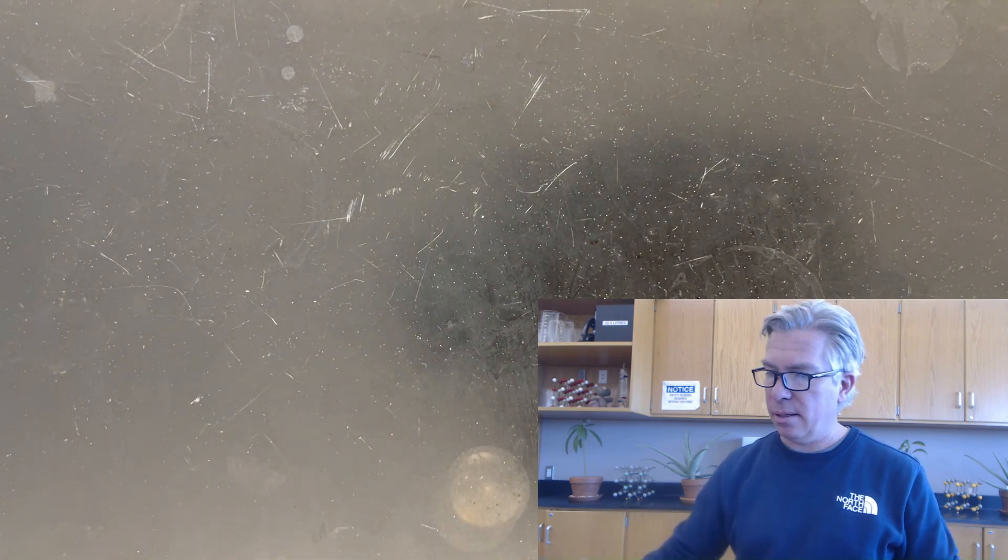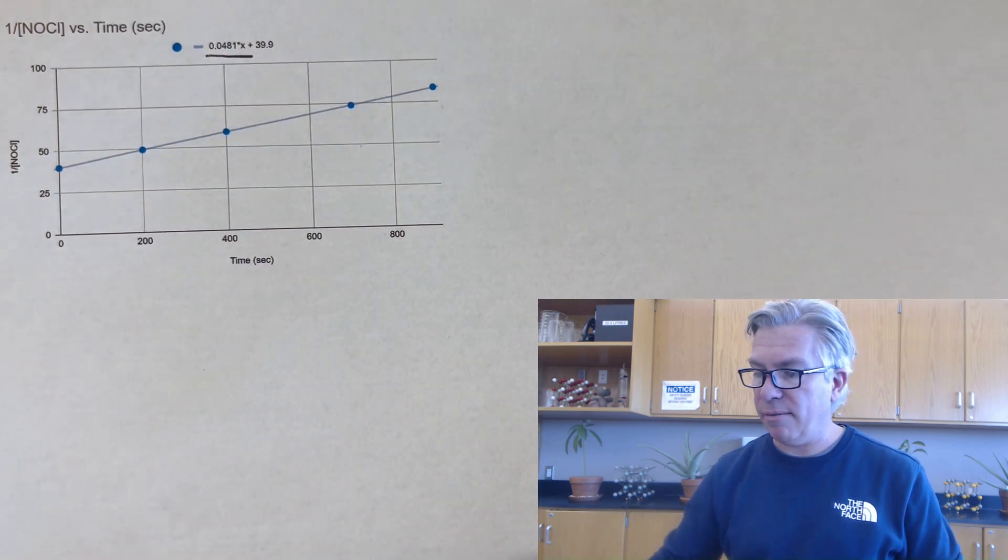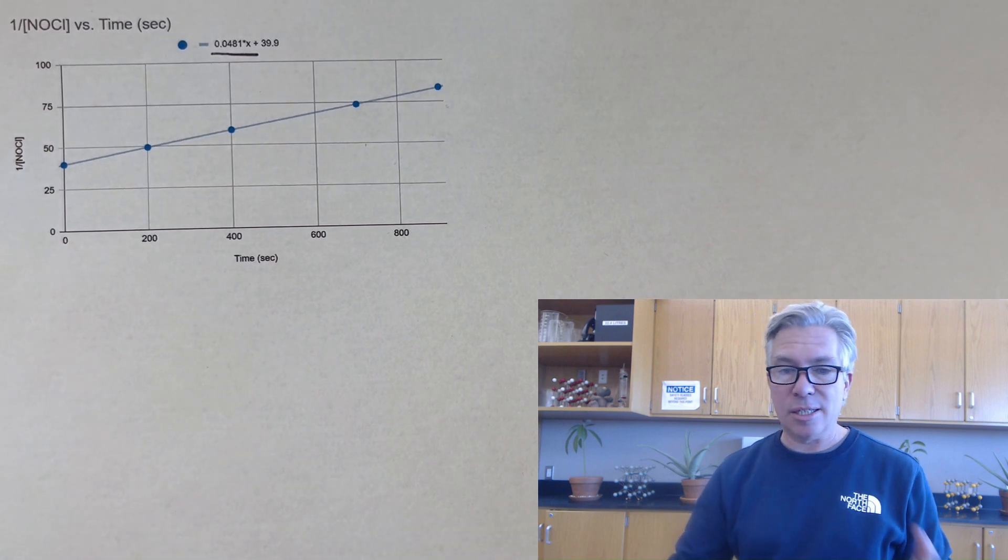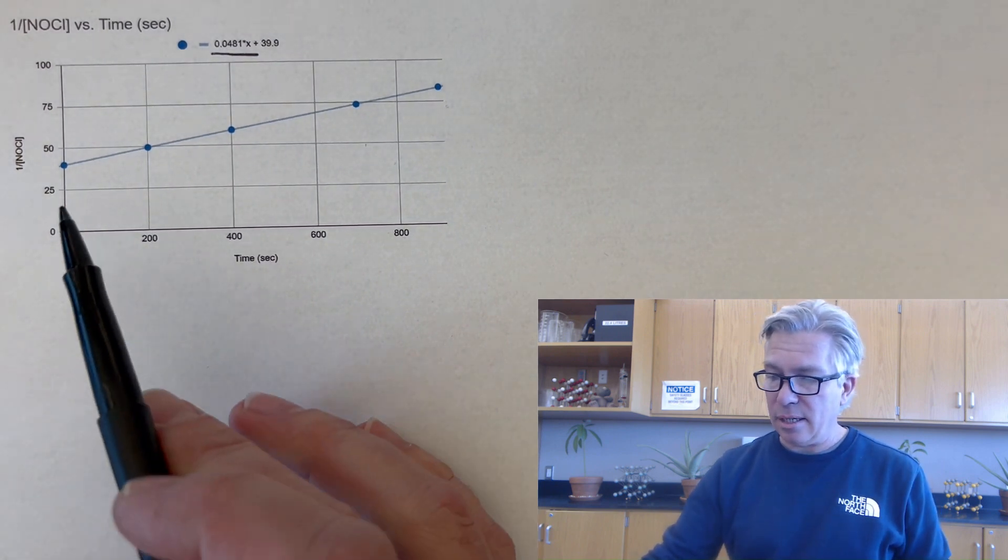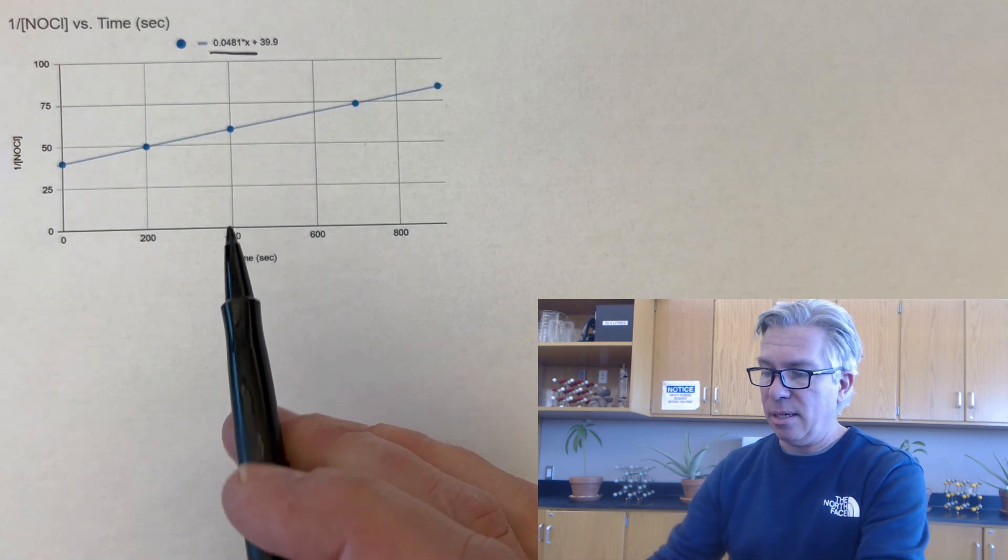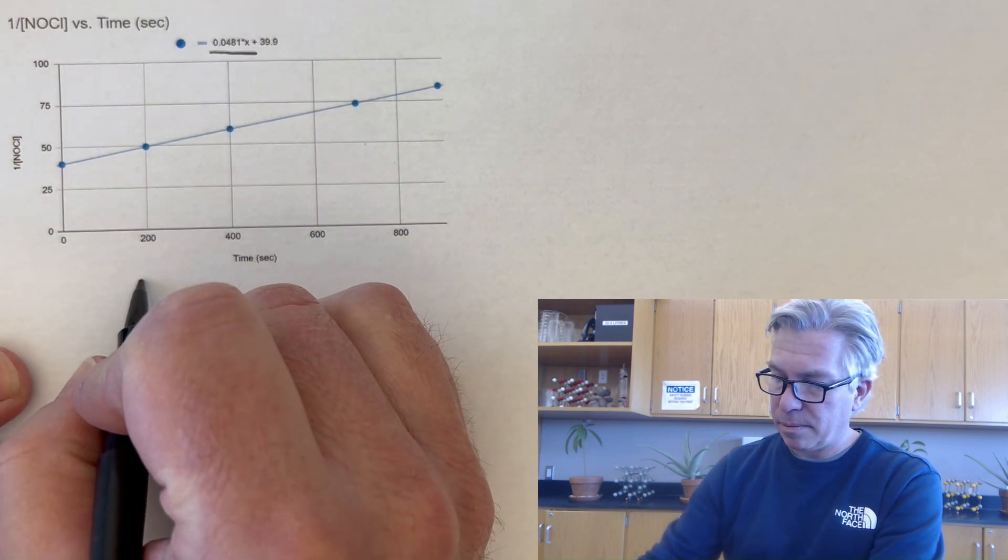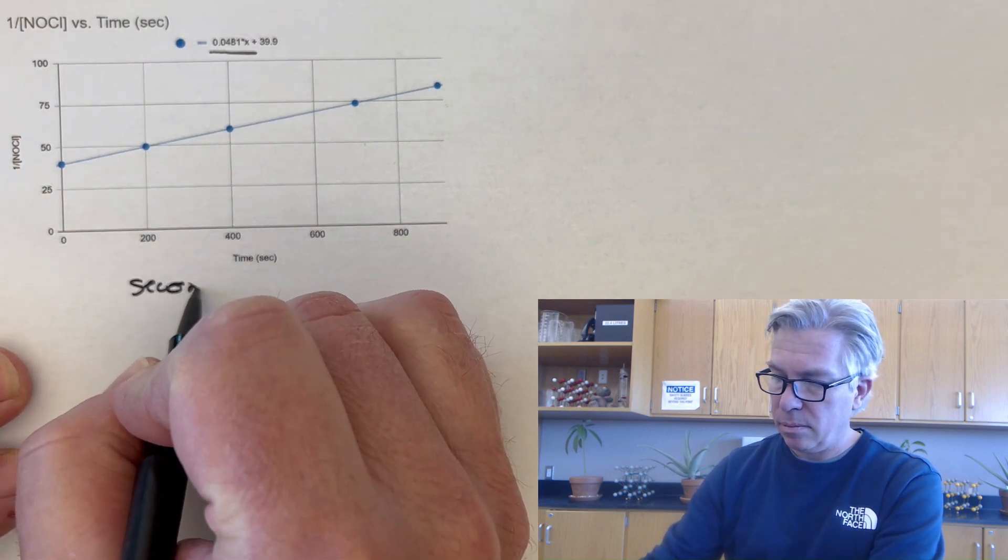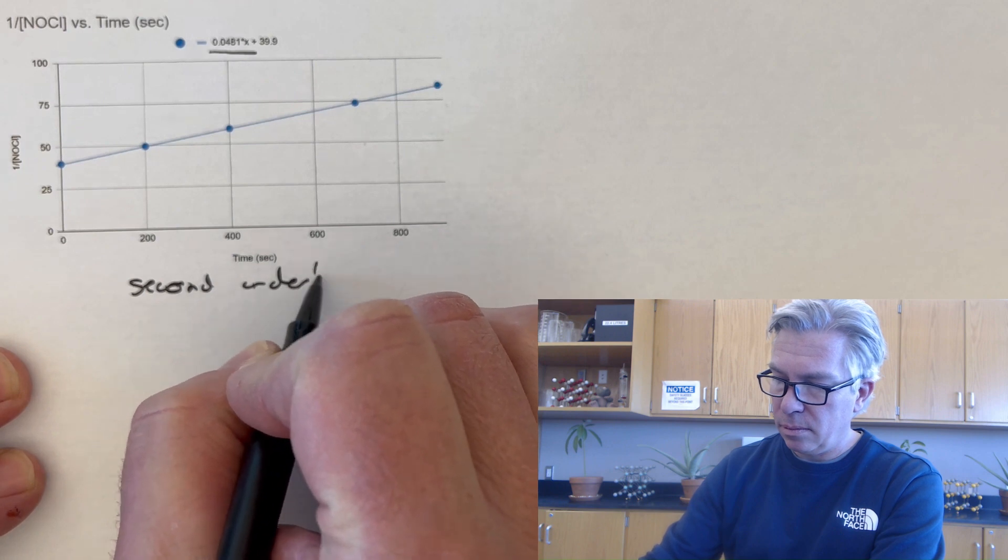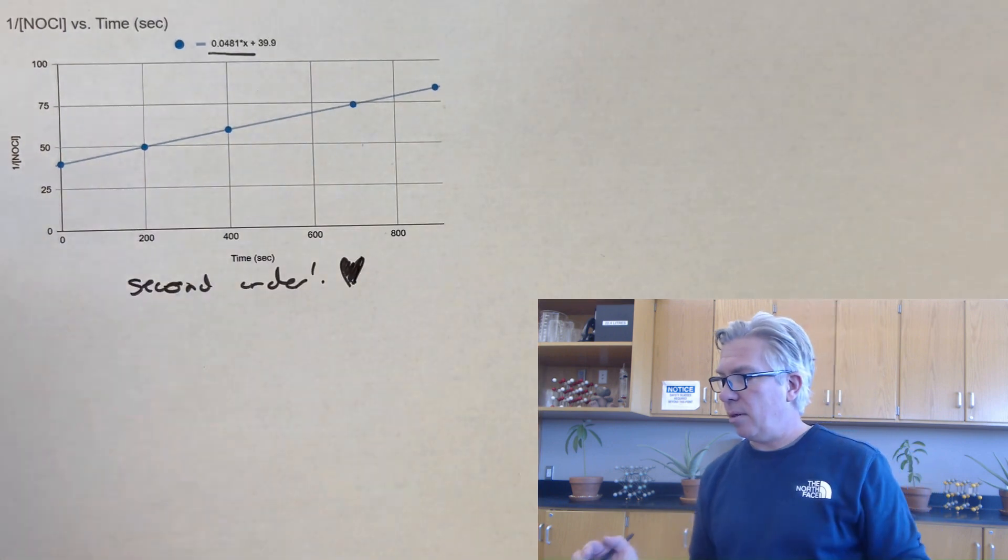And so definitely that is not quite linear. Just to double check, we're going to go to the inverse graph versus time. And that is spot on linear and it's got the positive slope. And so that tells me it's definitely second order. And we'll get that in there.